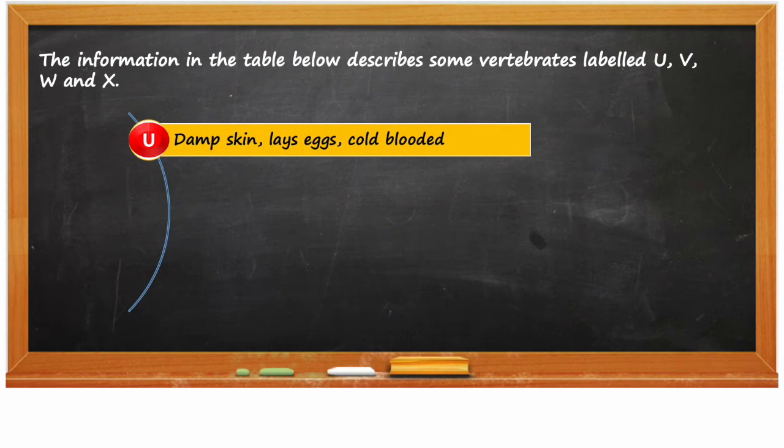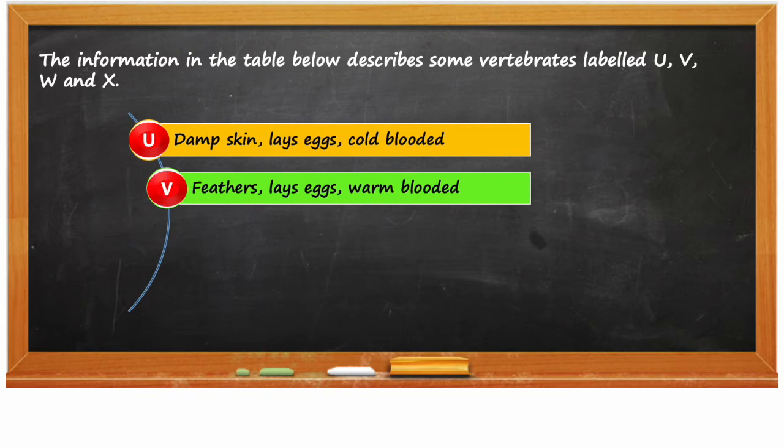The vertebrate labeled U has a damp skin, lays eggs, and is cold-blooded. The vertebrate labeled V has feathers, lays eggs, and is warm-blooded.